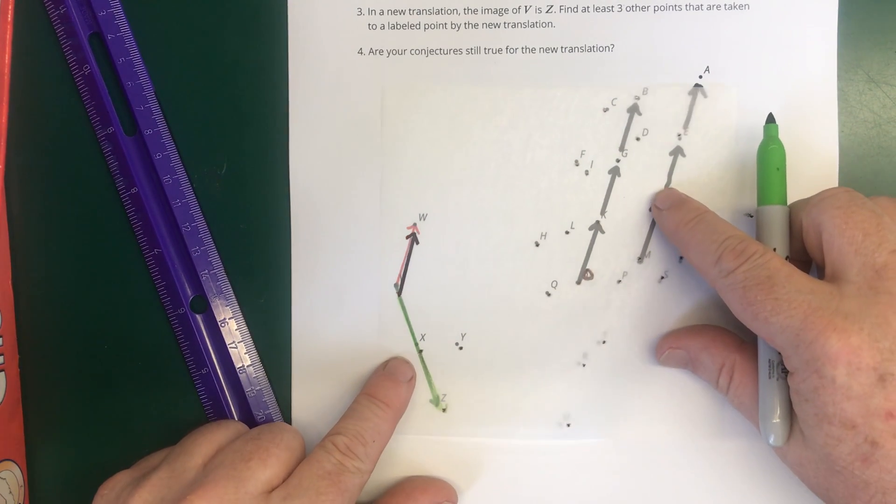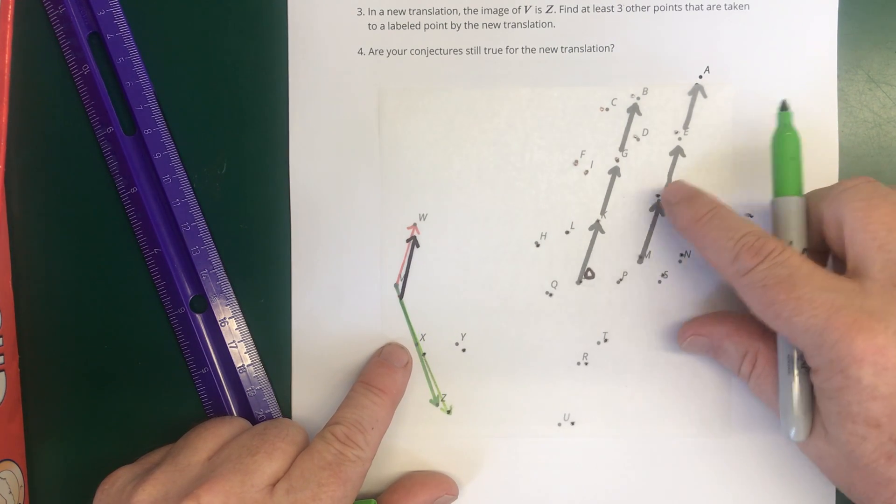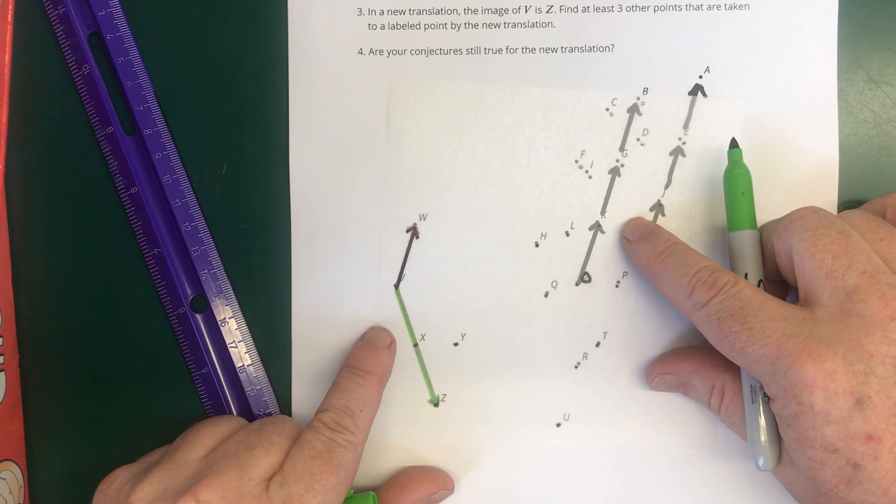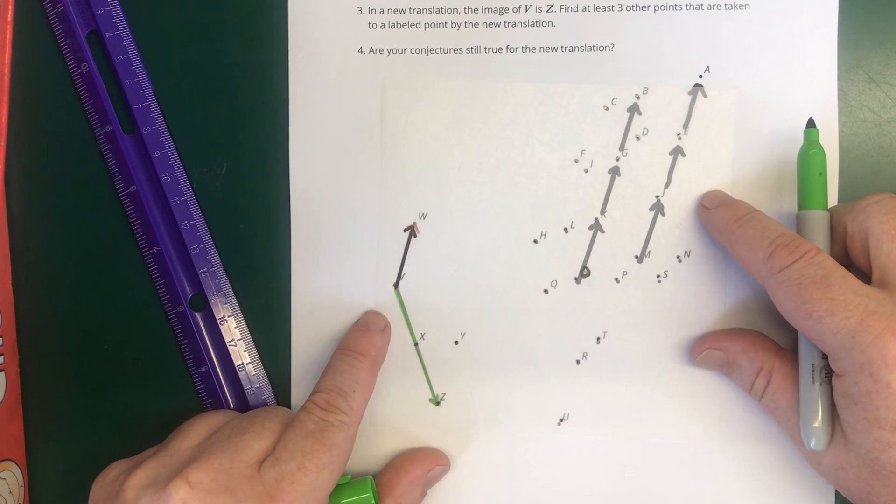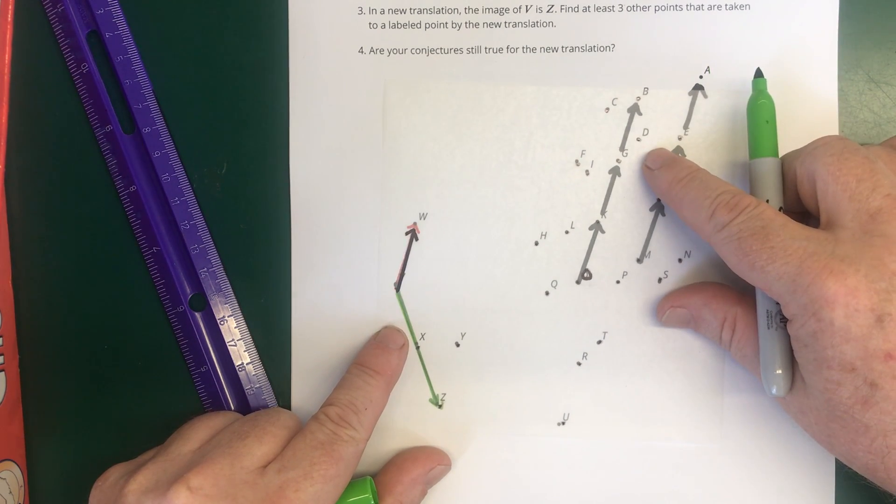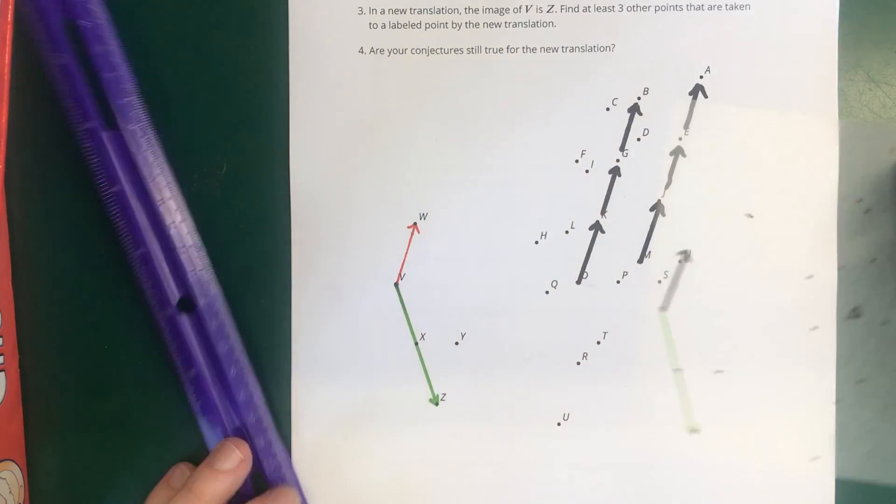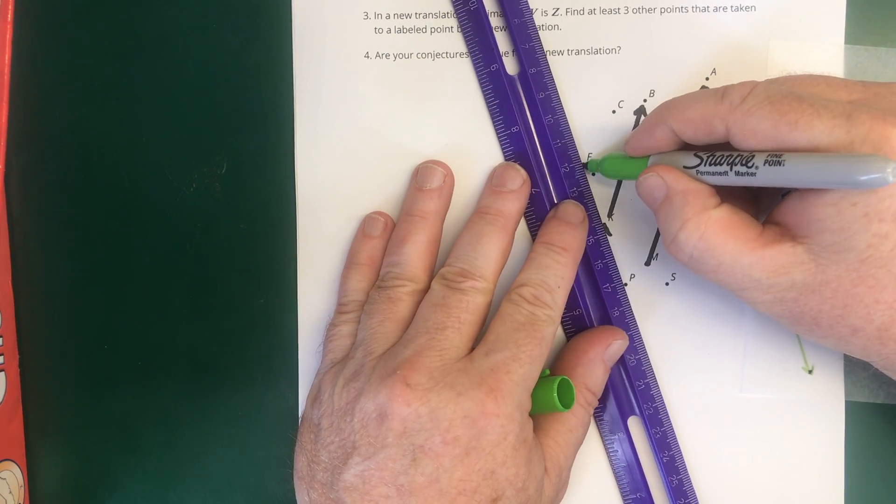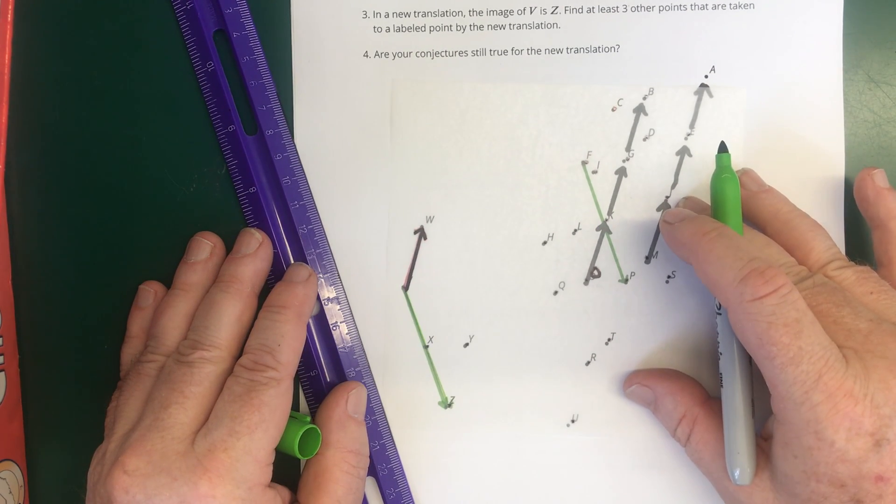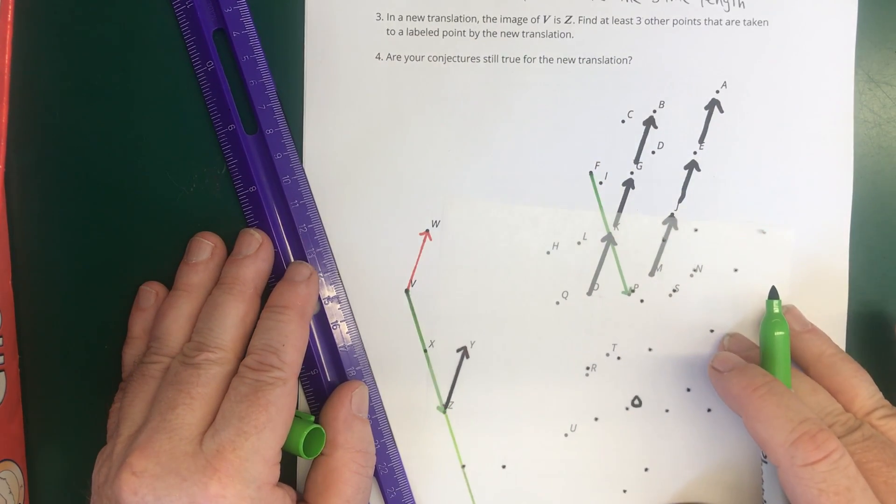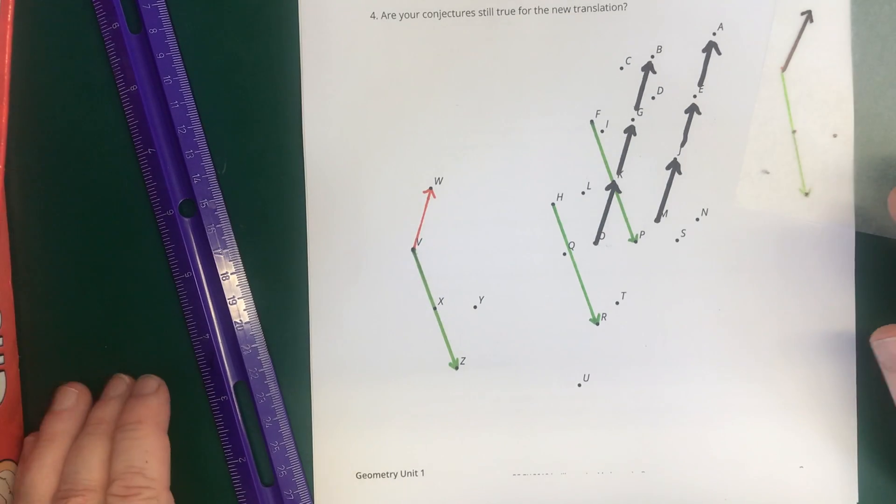And it looks like maybe H winds up on R. Maybe L. Let's see if L winds up on T. Hard to tell. Maybe it went too far. So maybe not L and T. But maybe F or I winds up on P. Let's see. Slide it down here. Yeah, it looks like F wound up on P. So it kind of looks like F wound up on P. And I think we came up with H winds up on R. Yeah, it looks like H winds up on R.